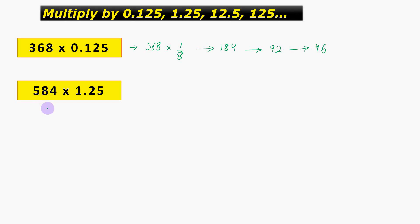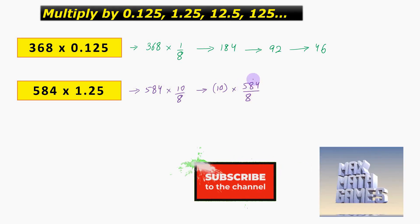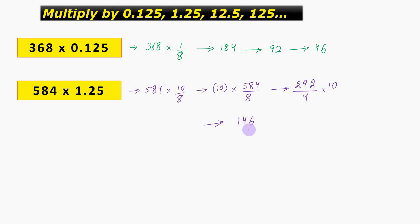In the next question, we have 584 into 1.25. This can be written as 584 into 10 divided by 8. We can keep 10 aside for a moment and focus upon 584 divided by 8. We divide 584 by 2 again and again, thereby getting 292 divided by 4 into 10, then 146 divided by 2 into 10, and lastly 73 into 10, thereby giving us the answer as 730.